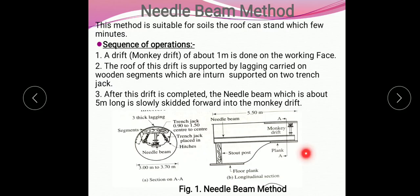Figure 1 shows the needle beam method. We can see a drift known as a monkey drift, which is about one meter and is done on the working face. When starting with the needle beam method, we take a drift called a monkey drift which is about one meter in length. The roof of this drift is supported by lagging.